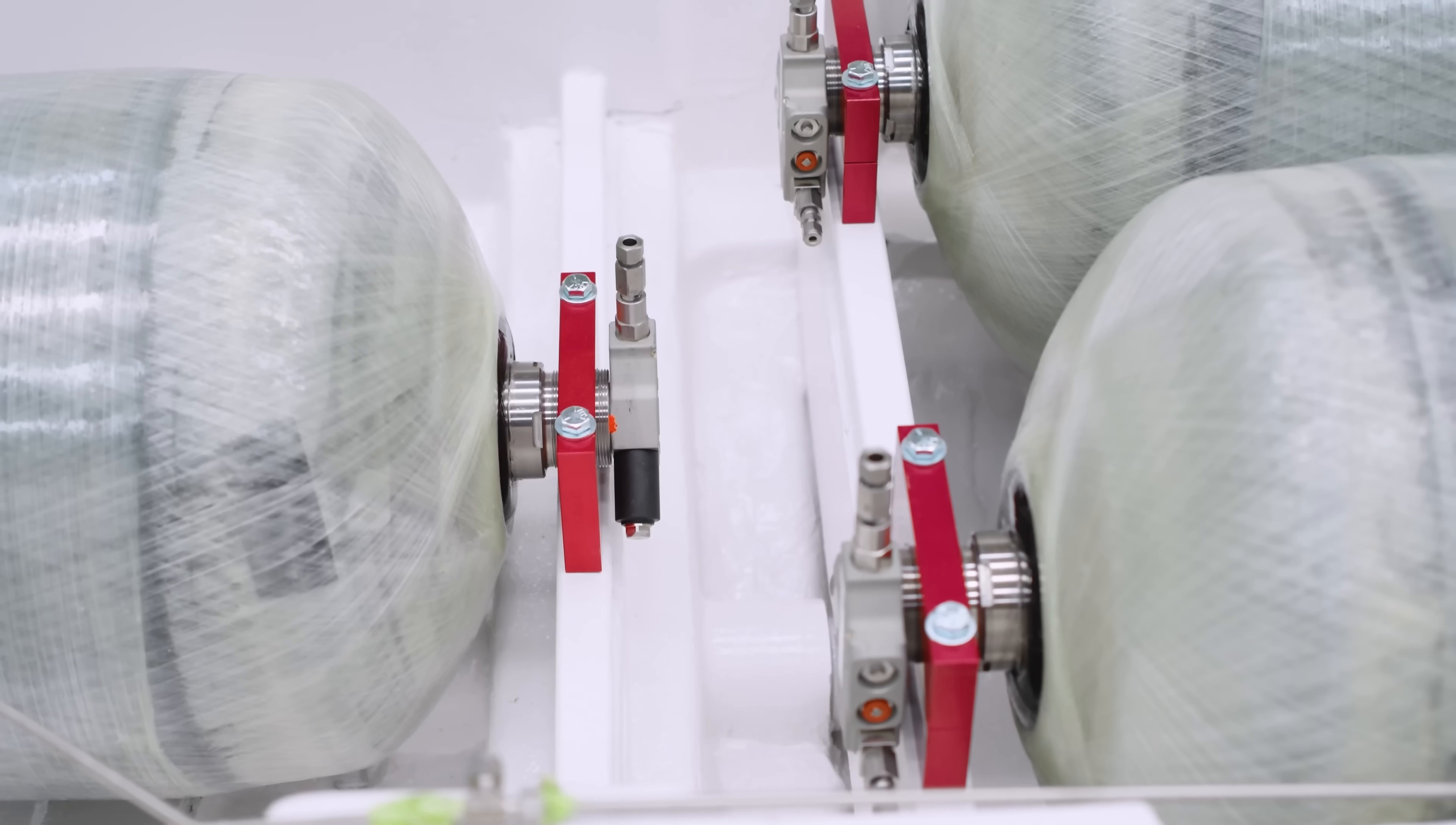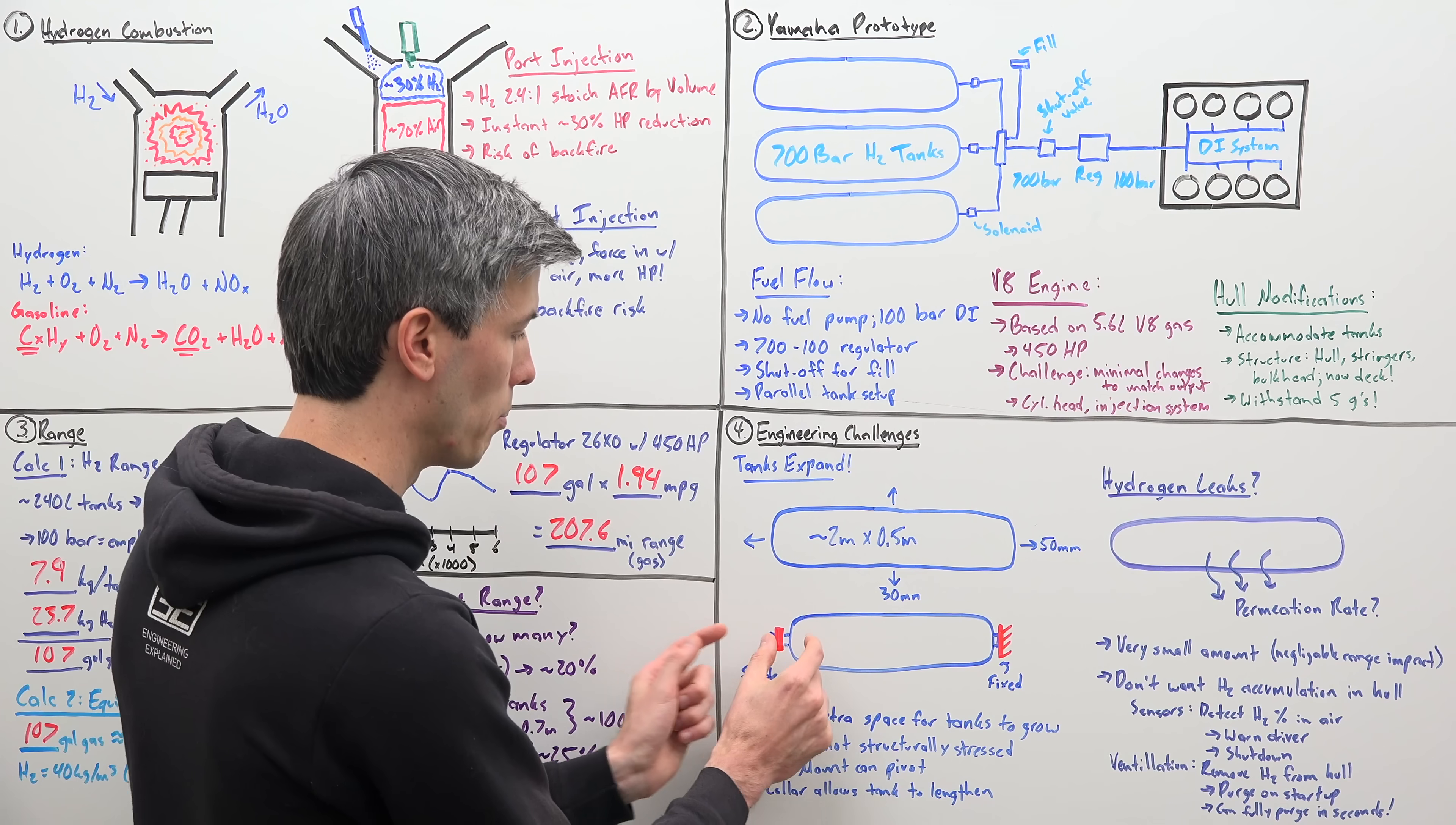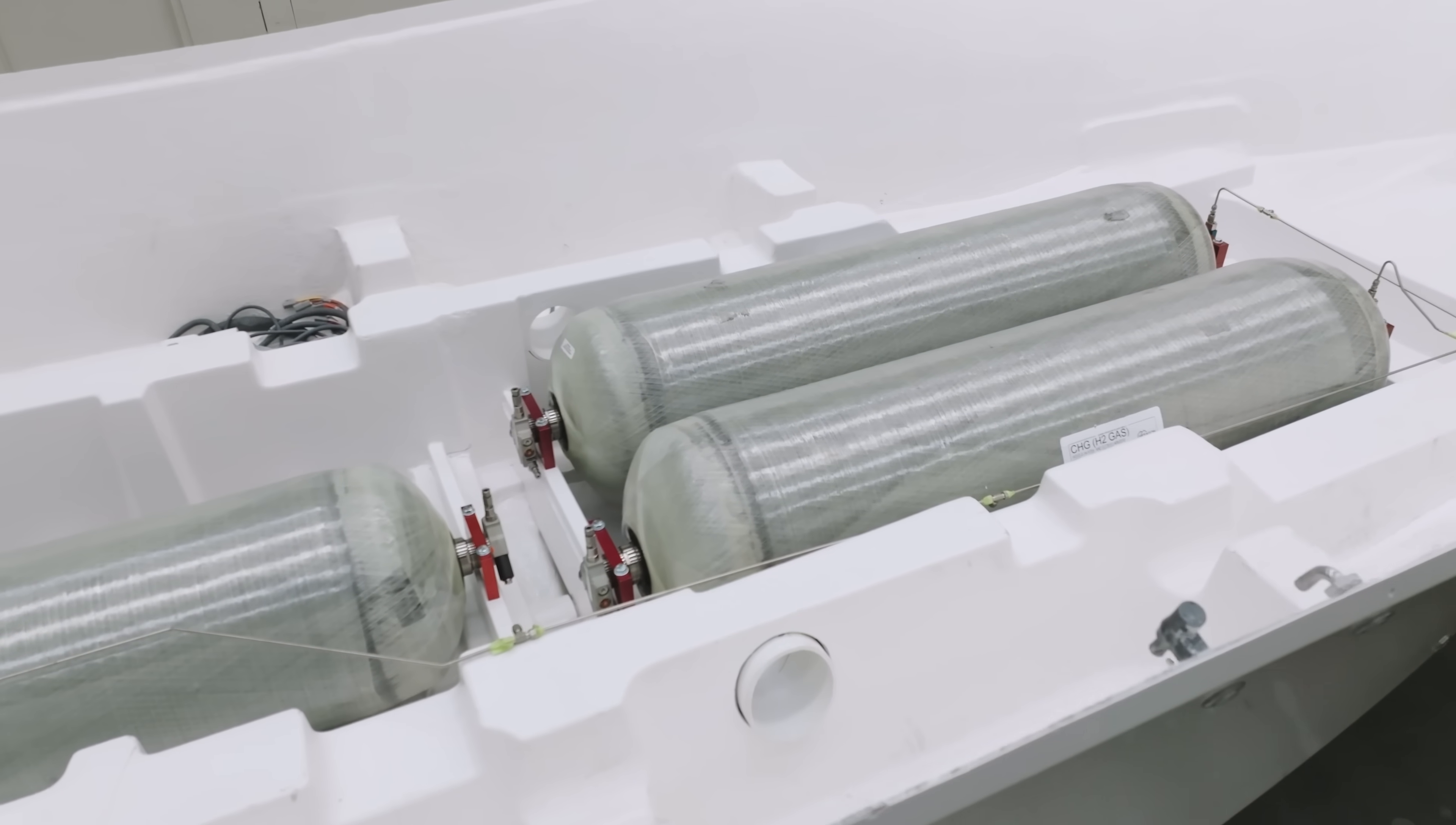So this is a significant increase in the size of that tank, which you of course have to accommodate for. So one of the ways is you're only going to fix it for the mounting on one side, allow that tank to grow in the lengthwise direction here, and then have a collar that holds it in place that that tank can then slide within the collar. Also, they don't want this to be a stressed member of the boat. So these collars are going to be able to pivot so that you're not stressing this tank itself.